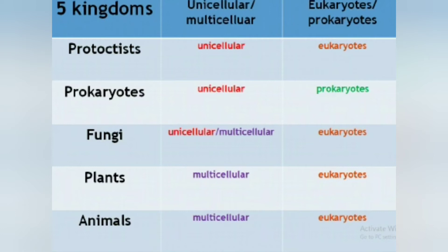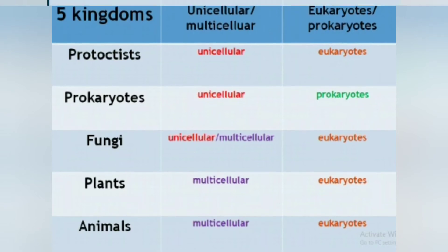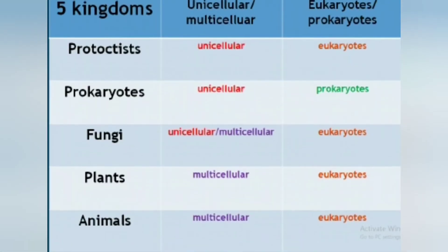This table describes the five kingdoms. Protoctists are unicellular and eukaryotic. Prokaryotes are unicellular and prokaryotic. Fungi are both unicellular and multicellular, and eukaryotic. Plants are multicellular and eukaryotic. Animals are multicellular and eukaryotic.